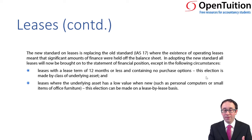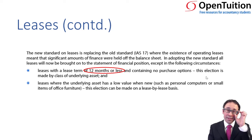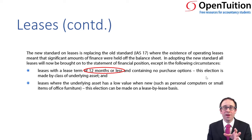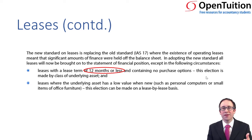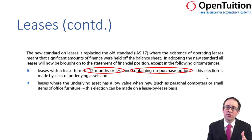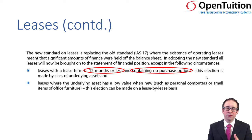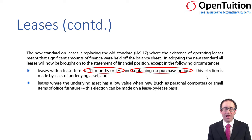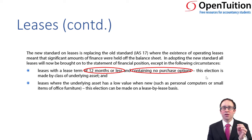So what are these exceptions? First, the asset is going to be used for 12 months or less. It's such a short period of time that it's not worth recognising the right of use asset and the lease liability — it's not going to give useful information to users. Just be careful: there's no purchase option, because if there is a purchase option within the lease, you will be looking to recognise that asset and that liability.